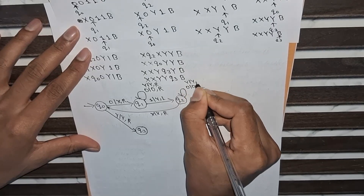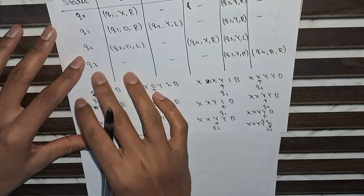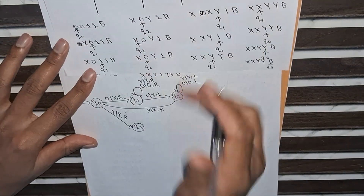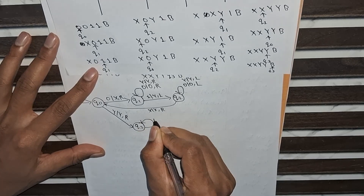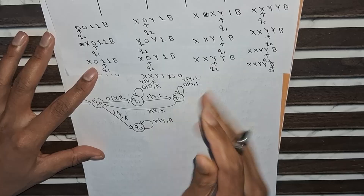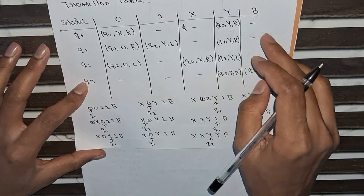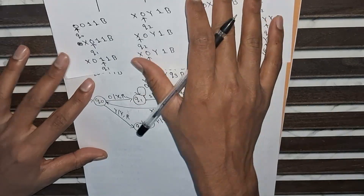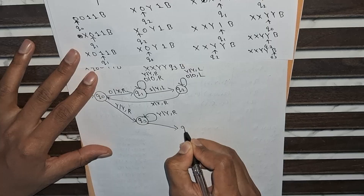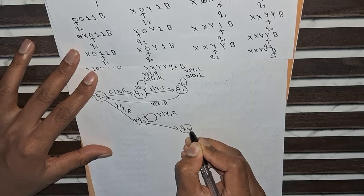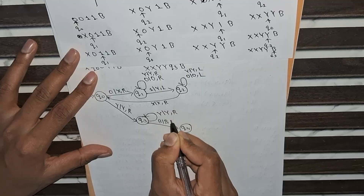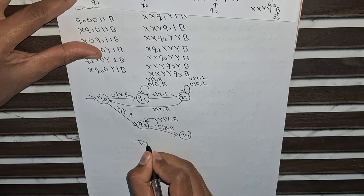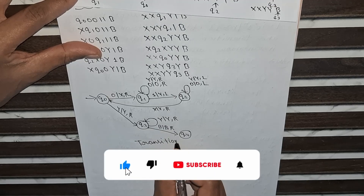State q2 also has a self-loop: on Y → keep Y, move left. State q3 has a self-loop: on Y → keep Y, move right. Finally, from q3 to q4: on blank → keep blank, move right. q4 is the final accepting state. This completes the transition diagram for the Turing machine.